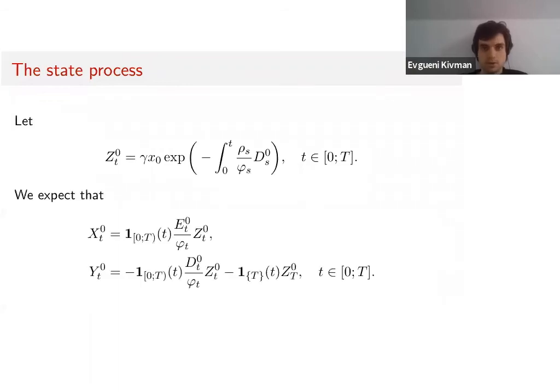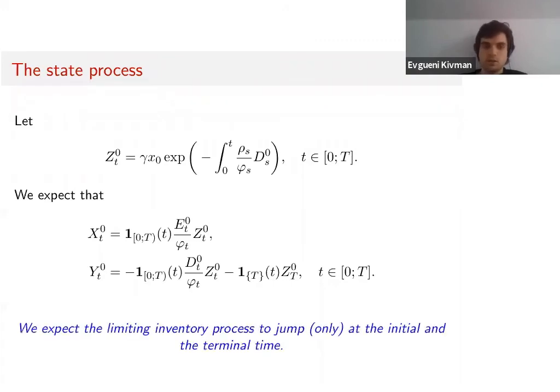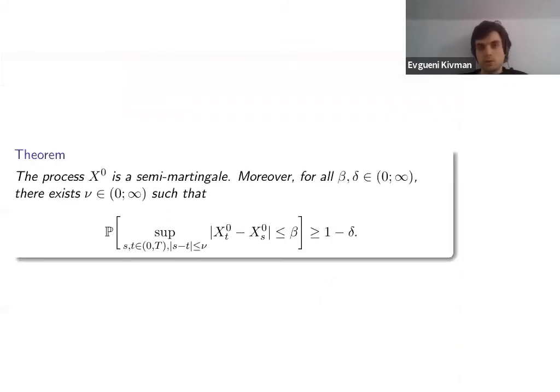For now, we introduce this differential process, and then we expect that X⁰ and Y⁰, which we want to be the limits of the state processes, are given in this form. We expect that the limiting processes jump only at the initial and the terminal time, as we have seen in the picture before.